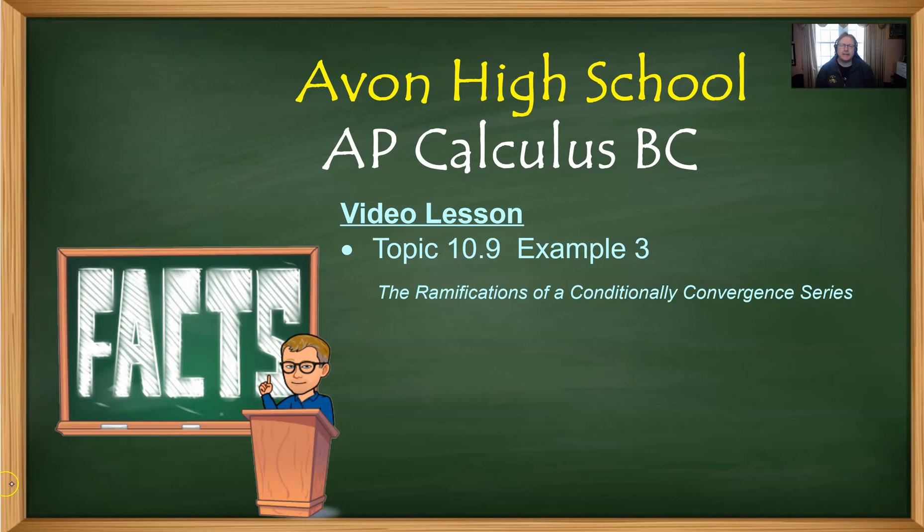We've talked about how alternating series can sometimes absolutely converge, which is the same kind of convergence that we've discovered through almost every other series test that we've used, or the alternating series could conditionally converge. But really, what does it mean to conditionally converge? Is it like a kind of converge type of thing? Well, yeah, but there's a little bit more to it, and it all has to do with what happens if you rearrange the terms of an infinitely conditionally convergent series. So let's take a look.